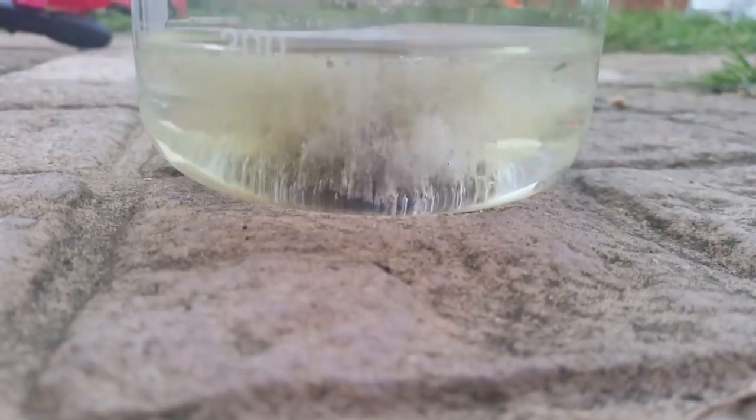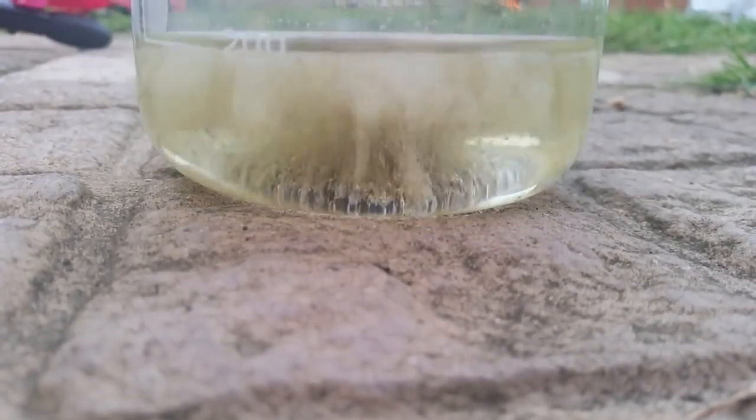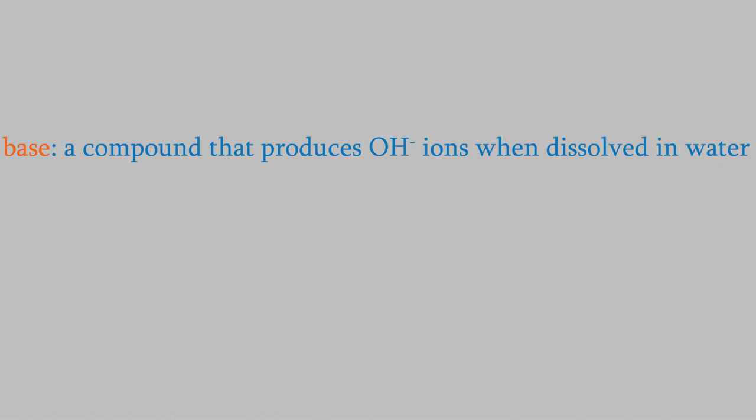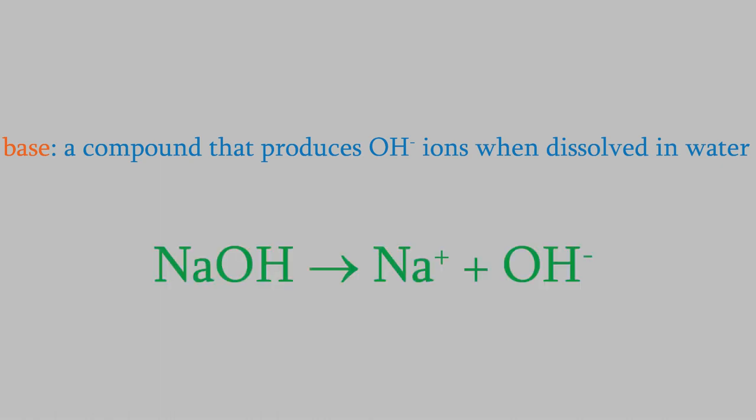In the same way, suppose we put sodium hydroxide, which is a common base, into water. The sodium hydroxide dissociates into sodium ions and hydroxide ions. By our definition, that makes sodium hydroxide a base.